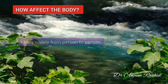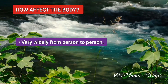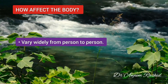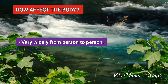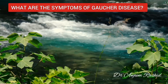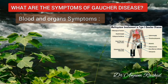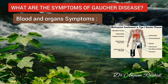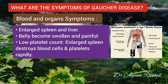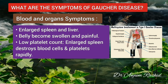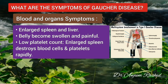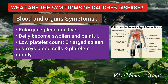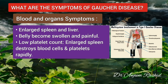The effects Gaucher disease can have on the body vary widely from person to person. Some people experience severe symptoms while others have none at all. Symptoms involving the blood and organs include enlarged spleen and liver. When Gaucher cells build up in the spleen and liver, these organs become enlarged and cause the belly to become swollen and painful.